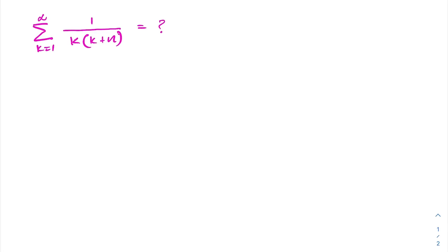Hello everyone, welcome to the Mathematics of My channel. In this video we are going to solve the infinite series sum from k equals 1 to infinity of 1 over k times k plus n, and we know the answer is H sub n over n, where H sub n is the nth harmonic number.